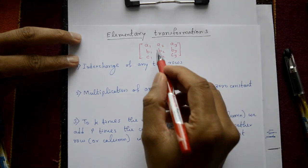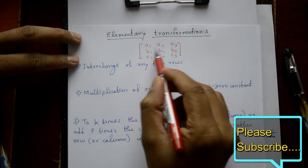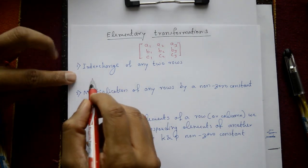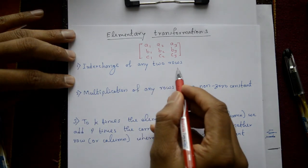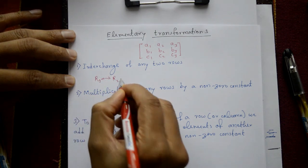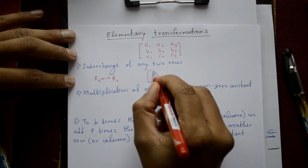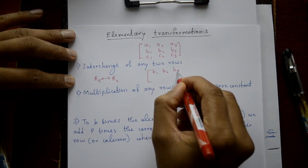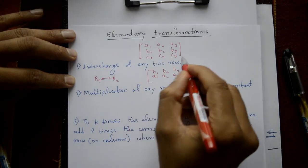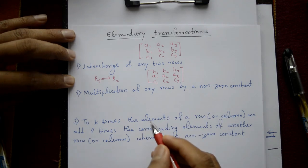Elementary transformation - one example. This is a matrix: a1 a2 a3, b1 b2 b3, c1 c2 c3, with rows and columns. The first elementary transformation is interchange of any two rows. For example, R1 interchange with R2, so the matrix becomes: b1 b2 b3, then a1 a2 a3, and the third row is unchanged: c1 c2 c3.